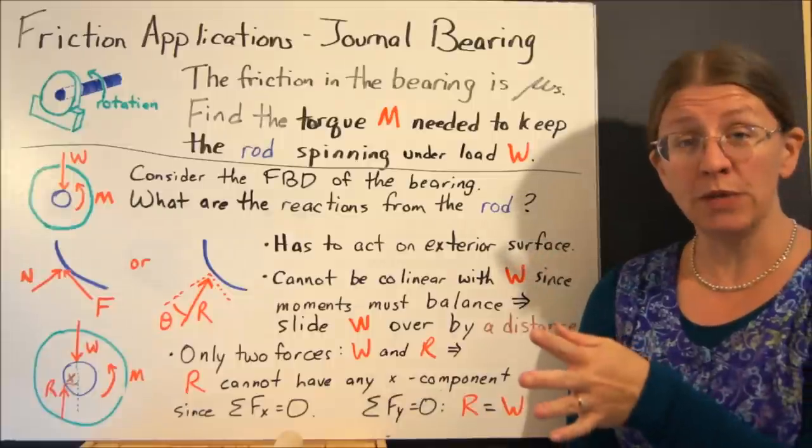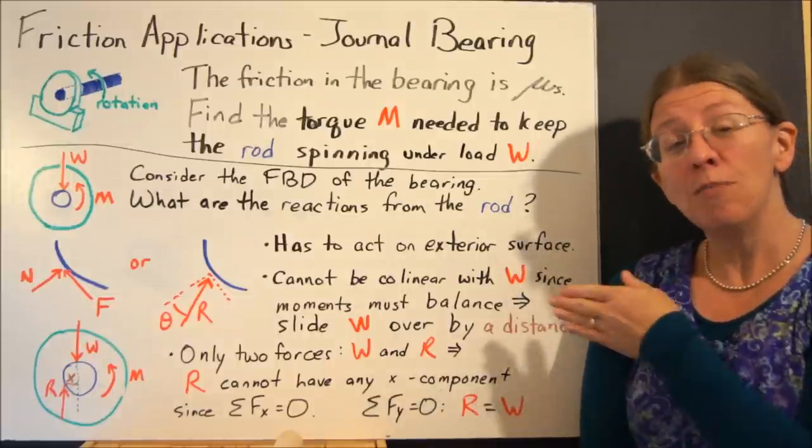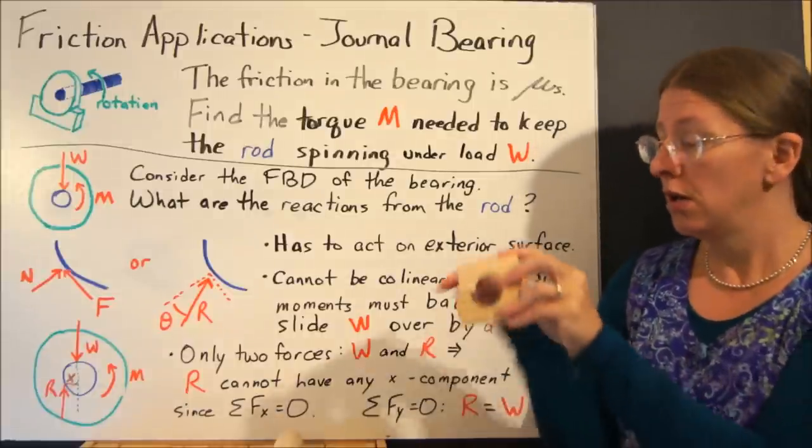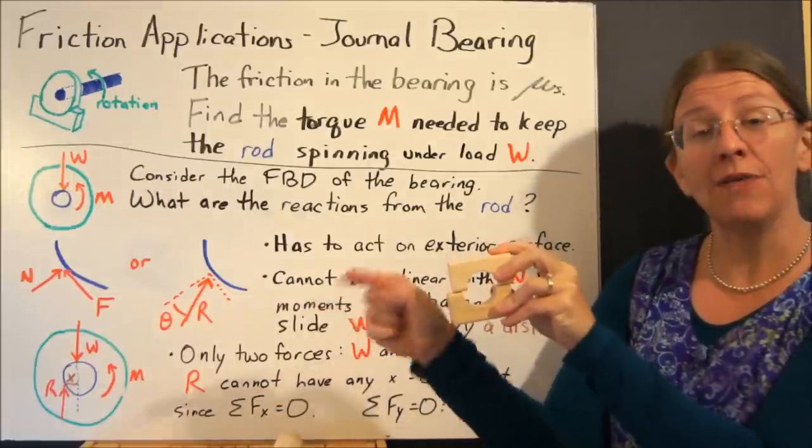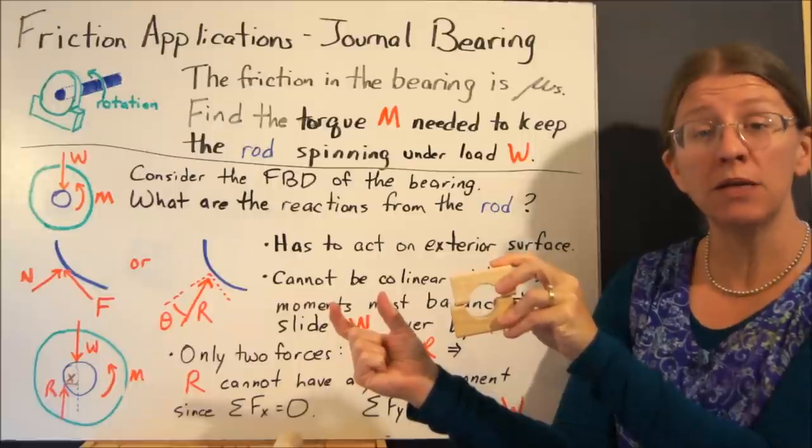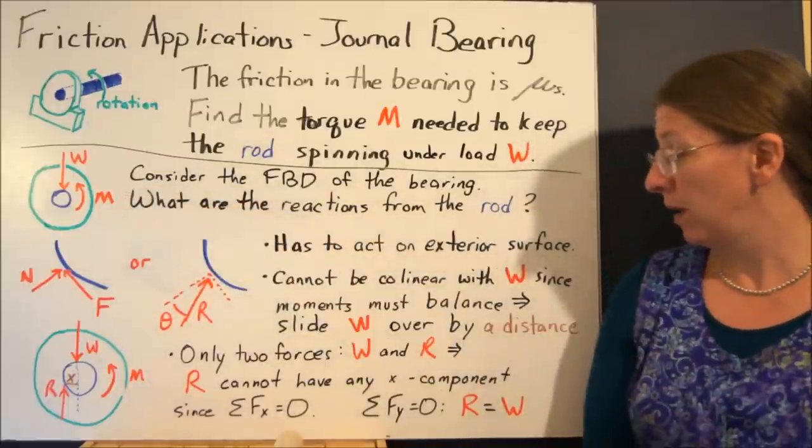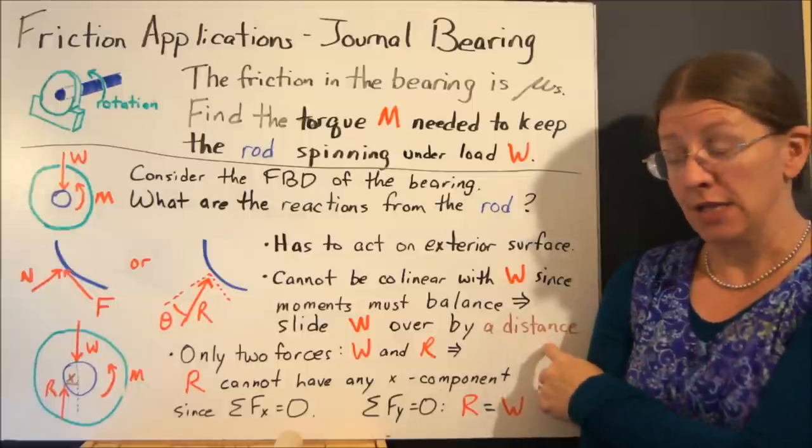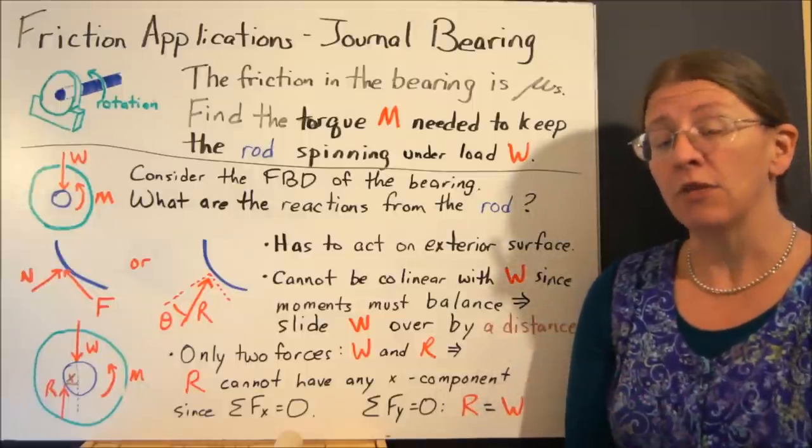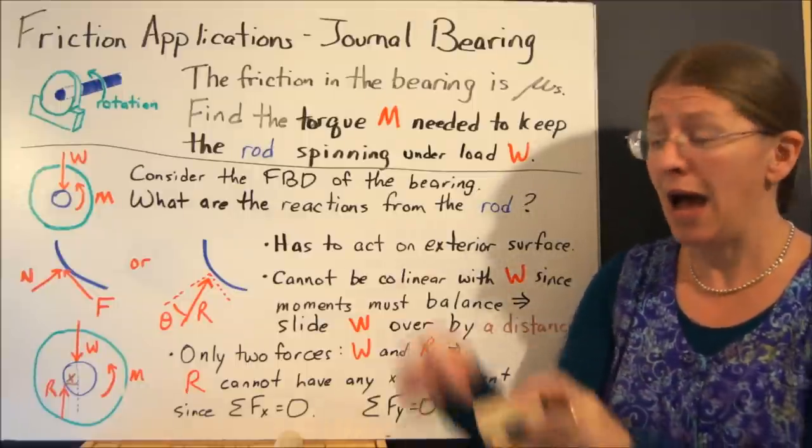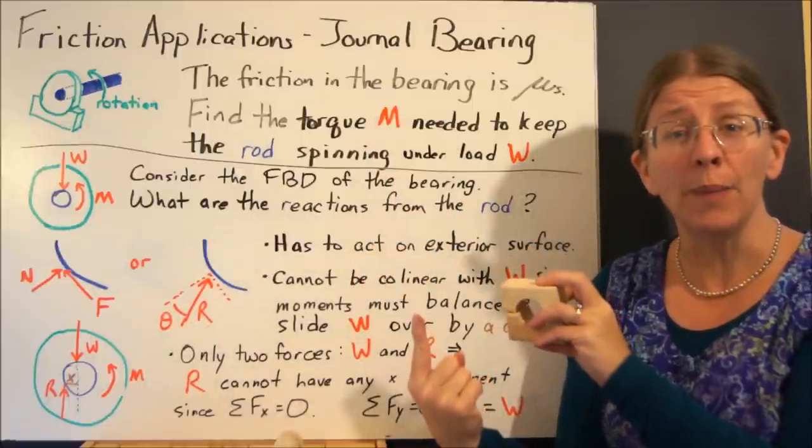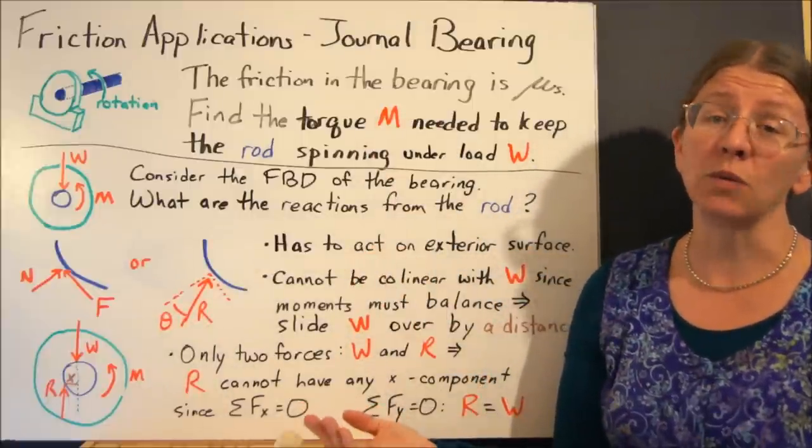So I'm going to, same as we did with tipping, I'm going to slide my reaction force over so that I have a distance to multiply it by a perpendicular distance to balance that M. We're going to talk about that in just a second. But I can also say that if I only now have two forces. I have W coming down and R coming up. If you only have two forces, they're equal and opposite.